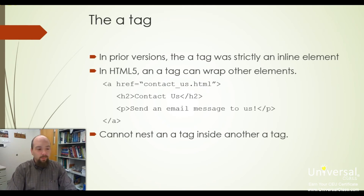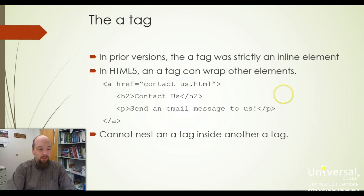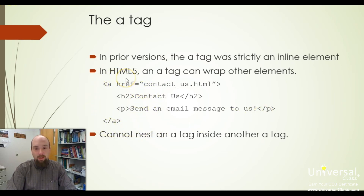The A tag — our anchors — works differently now. In older versions of HTML, the A tag was an inline element, meaning you could only use it around an image or a bit of text. In HTML5, the A tag can be a wrapper — a container element. You can take an A tag, provide a link, and then put block elements inside of it, such as an H2 for 'Contact Us' and additional text, making the entire thing the anchor link. However, the catch is that you cannot put one A tag inside of another A tag.